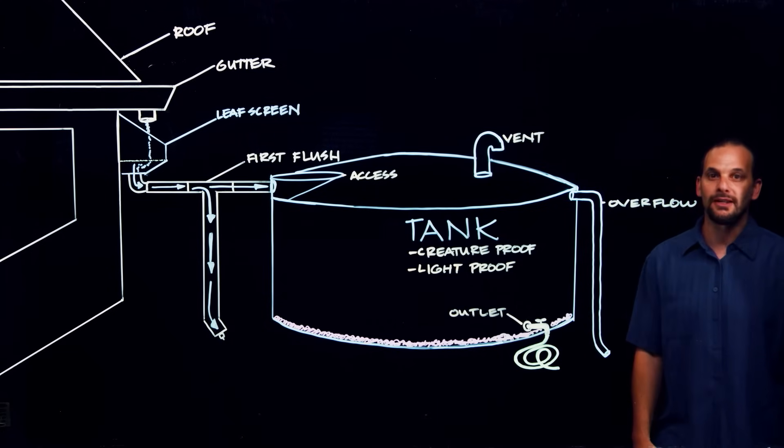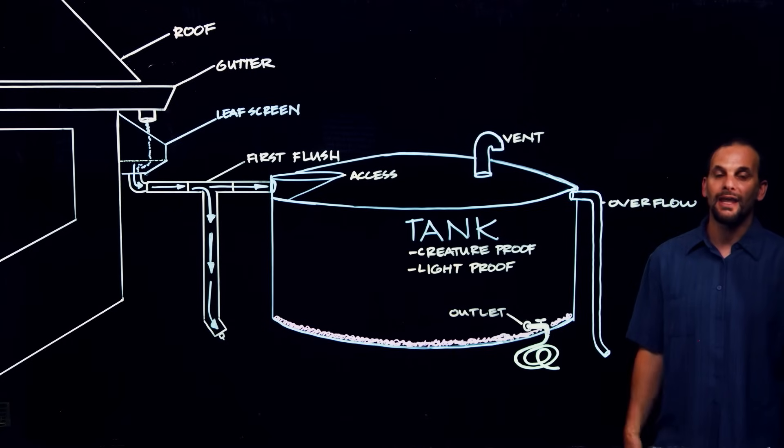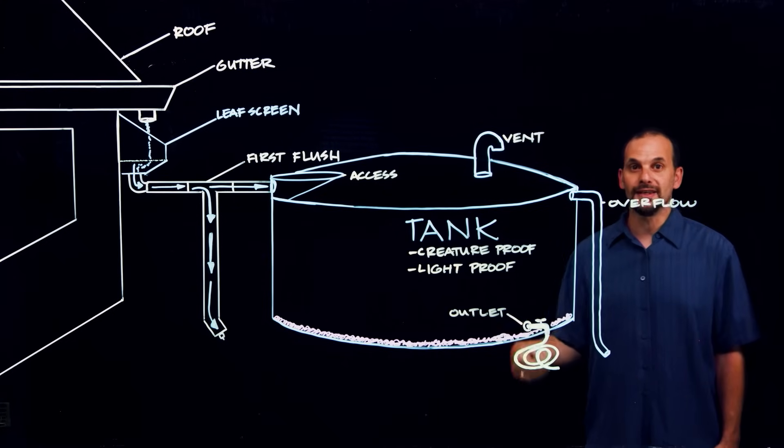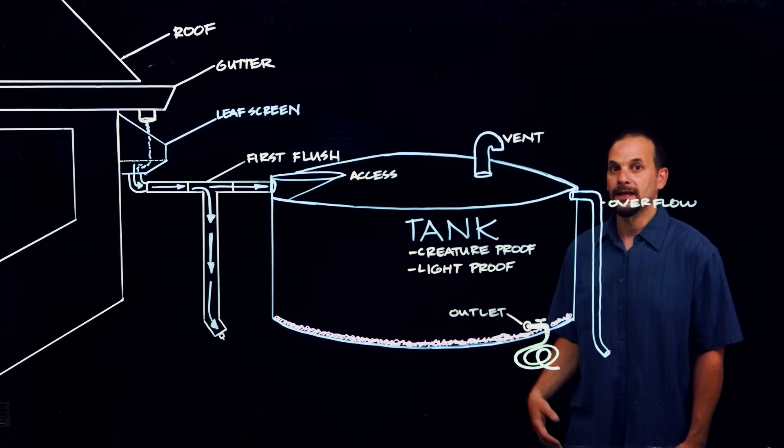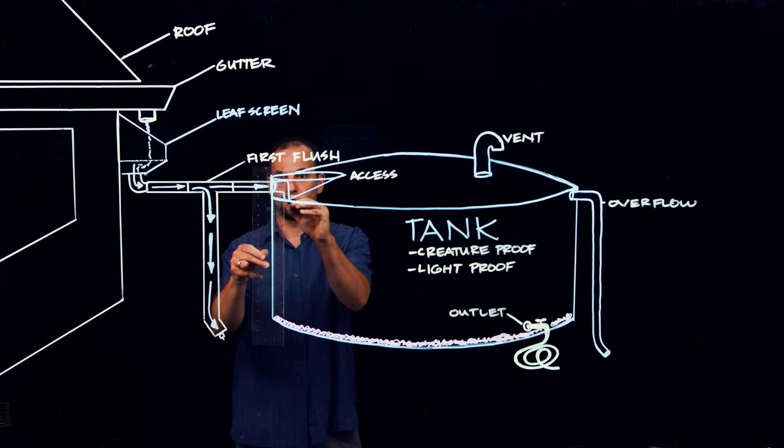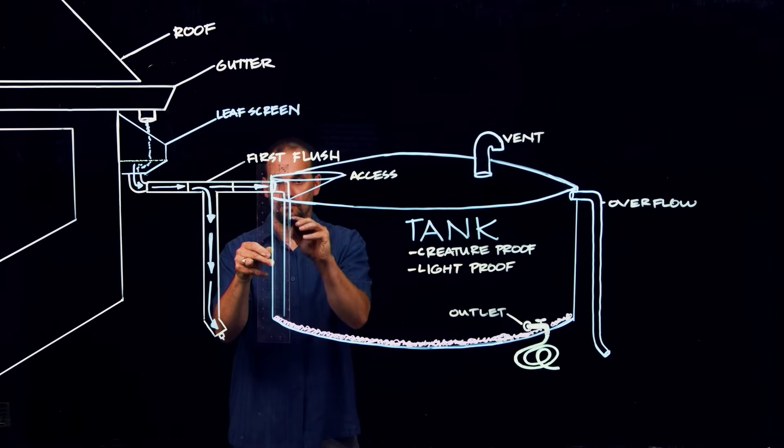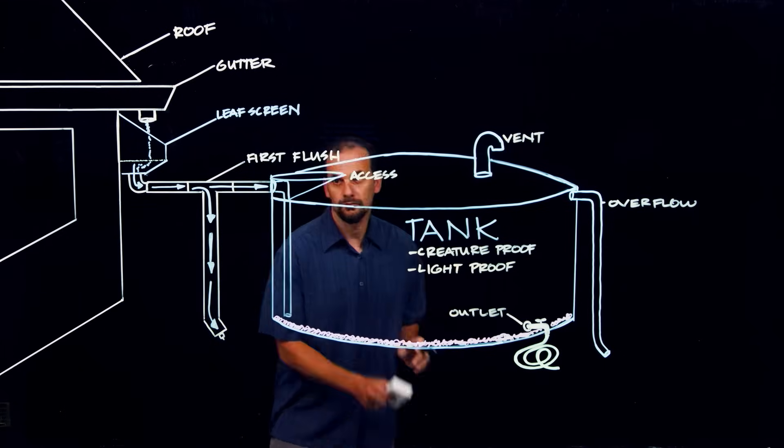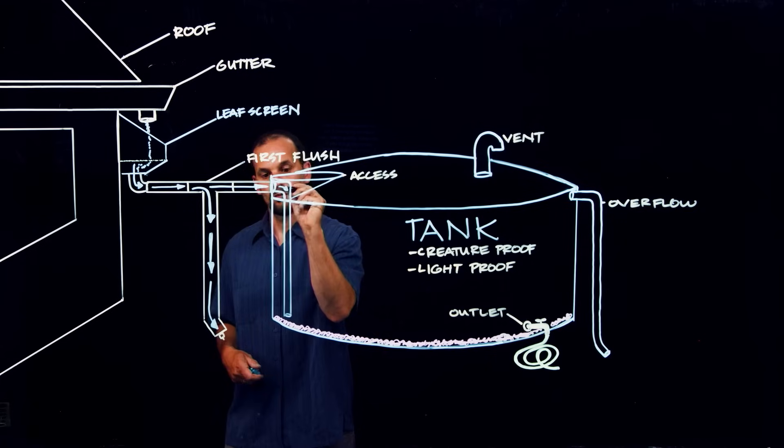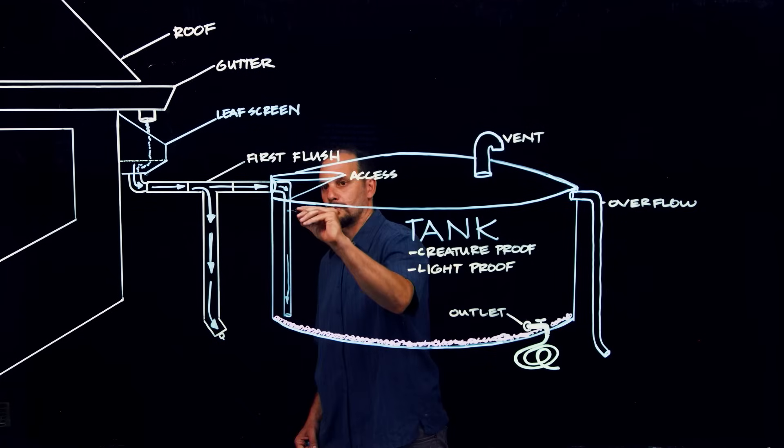So, a lot depends on your final use of the water and how clean you need it to be. Now, another good method for reducing the impacts of the sludge layer is to actually bring the inlet pipe down through the tank to outlet at the bottom of the tank if possible, so the falling water doesn't disturb the sludge when it comes down and enters the tank.